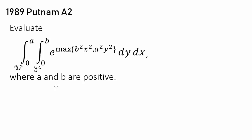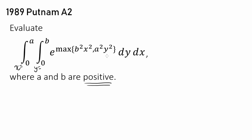So if b squared x squared is greater than a squared y squared, we raise e to b squared x squared. And when a squared y squared is greater than b squared x squared, we raise e to a squared y squared. Here a and b are positive. I'm not quite sure how to start because of this maximum function, so let's think about how b squared x squared and a squared y squared compare in size in the region we are integrating over.